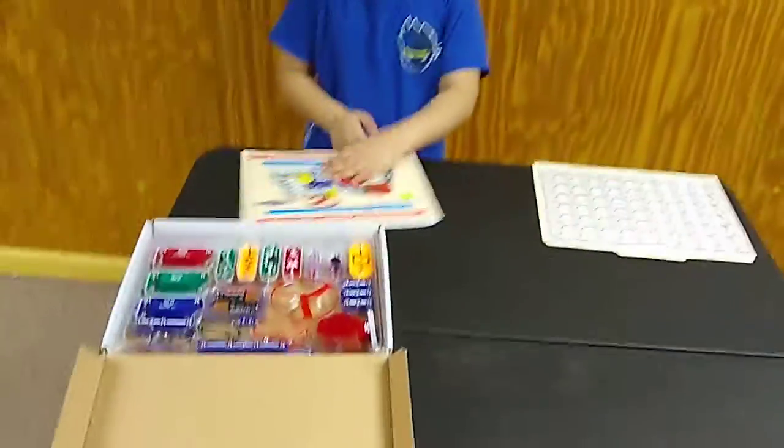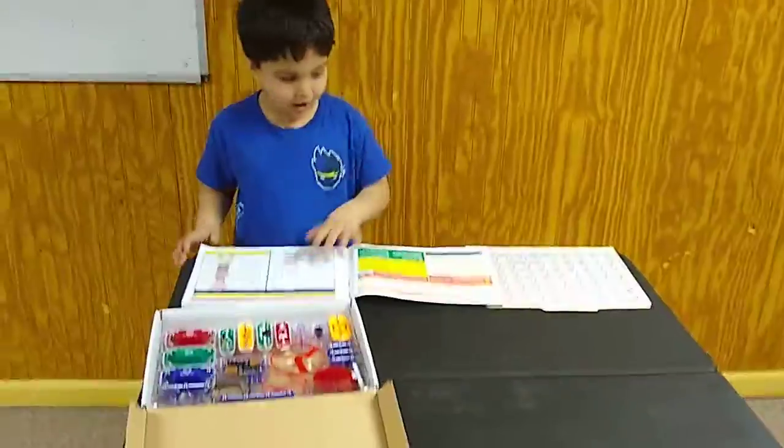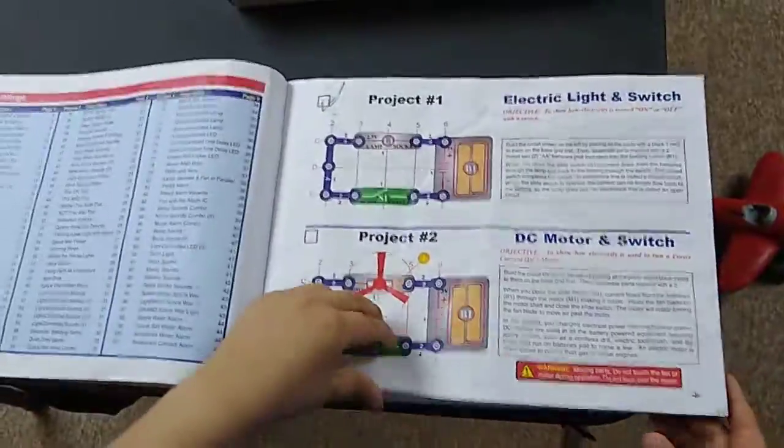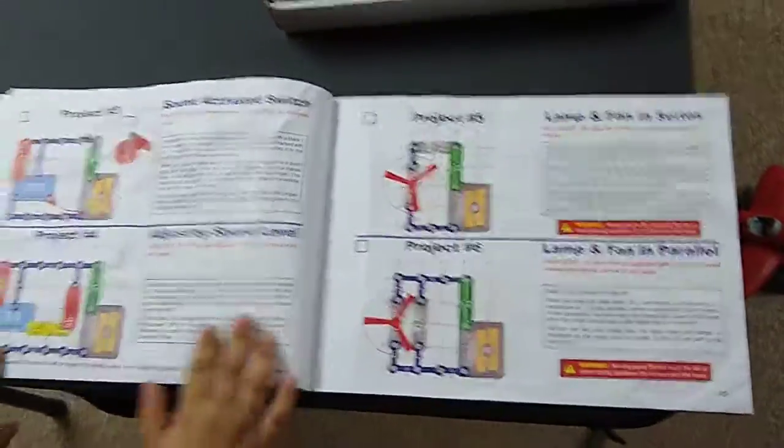We are looking at the Snap Circuits Junior. We are going to build number 9. Number 9? 6, 7, 8, 9. And what is 9 about? It's about Project 3.